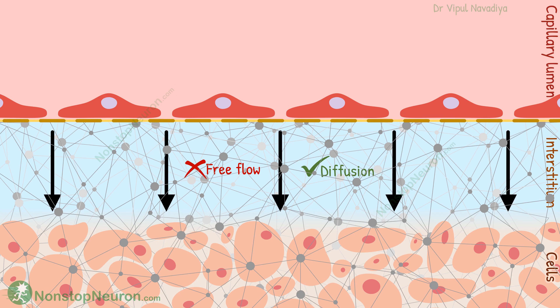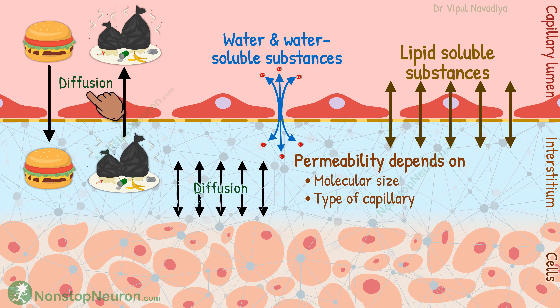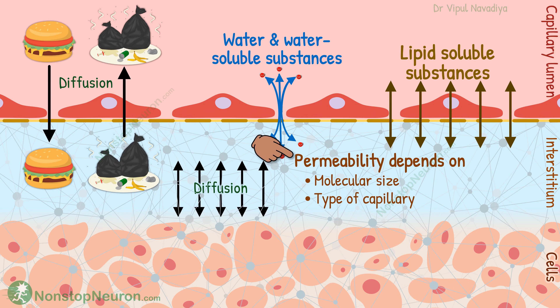So this was all about the capillary exchange of nutrients and waste products. Now let's have a quick summary. Capillaries deliver nutrients and collect waste products from the interstitium. This process mainly happens by diffusion. For water and water-soluble substances, the main pathway is intercellular clefts. Lipid-soluble substances can cross the capillary wall from anywhere. The permeability of a substance depends on its molecular size and also type of capillary. In interstitial gel, the fluid diffuses rather than flowing.